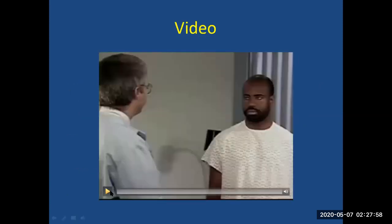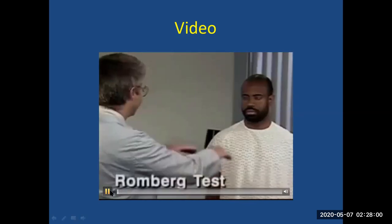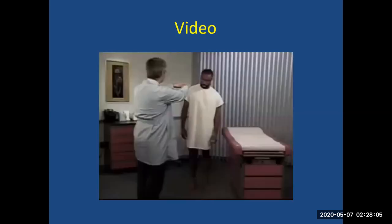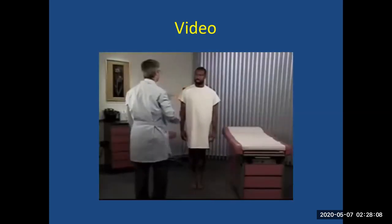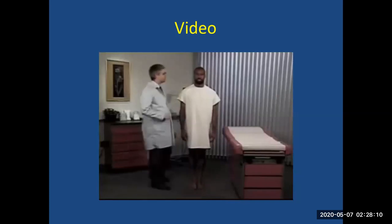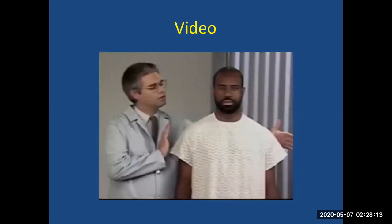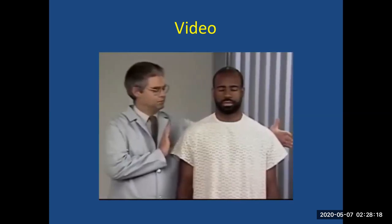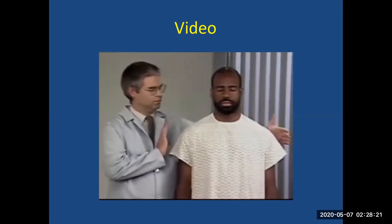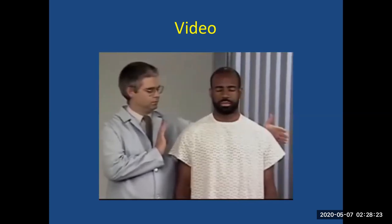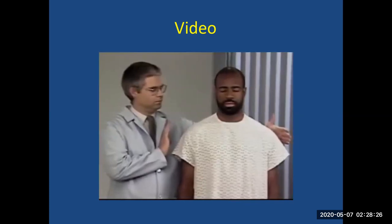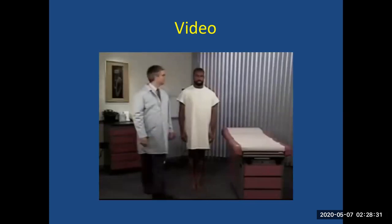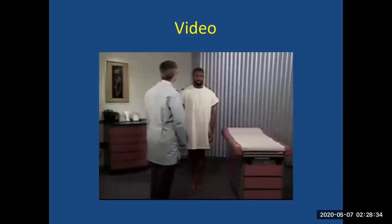The Romberg test primarily tests position sense. Ask the patient to stand with feet together — normally they maintain this posture with eyes open, indicating intact cerebellar function. Then have the patient do the same for 20 to 30 seconds with eyes closed; posture should remain steady with only minimal swaying, indicating intact position sense. If the patient maintains posture with eyes open but not with eyes closed, this is a positive Romberg test.